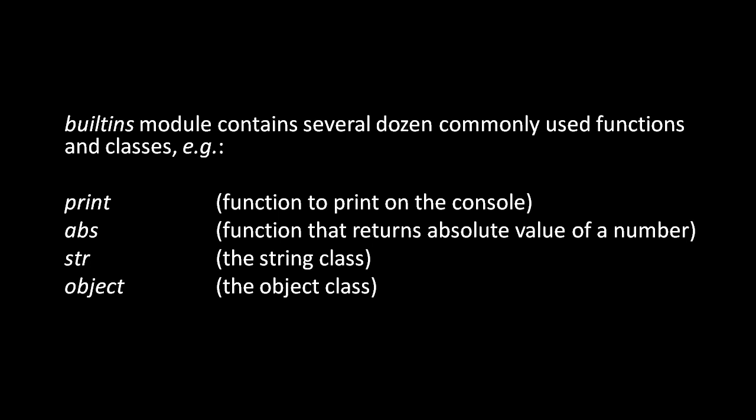The print function prints text on the console, a function called abs, or absolute, returns the absolute value of a number, or classes like string and object. These things are all placed in the built-ins module.